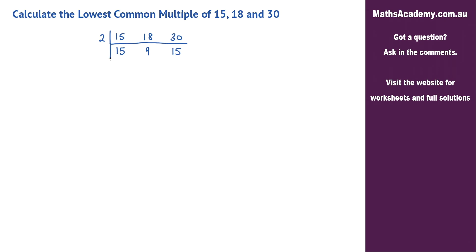Draw another L. 2 won't go into any of these numbers, but 3 will. 3 is a factor. 3 is a factor of 15, going 5 times. 3 is a factor of 9, goes in 3 times. And 3 is a factor of 15, goes in 5 times.